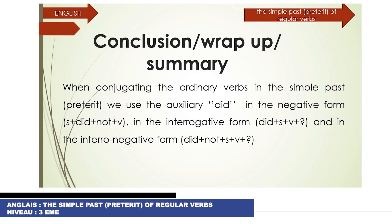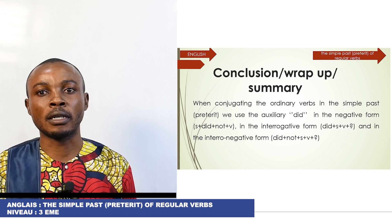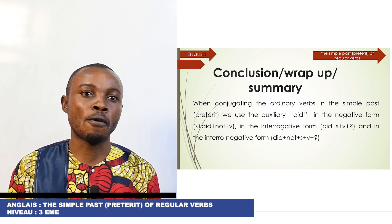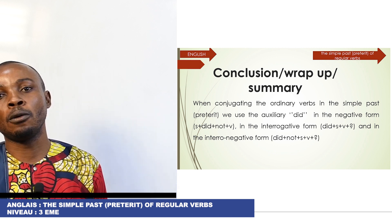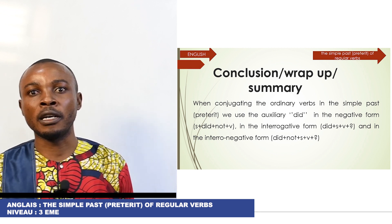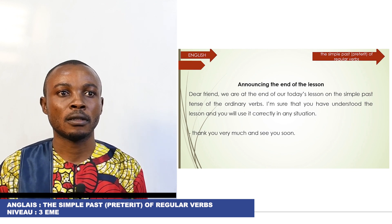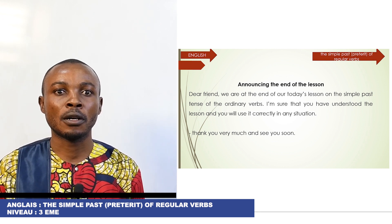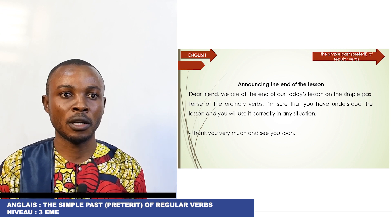Well, now, when conjugating ordinary verbs in the simple past or preterit, we use the auxiliary did: in the negative form as subject plus did plus not plus verb, in the interrogative form did plus subject plus verb plus question mark, and in the inter-negative form did plus not plus verb plus question mark. So, dear friends, we are at the end of our today's lesson on the simple past tense of ordinary verbs. I'm sure that you have understood the lesson and will use it correctly in any situation. Thank you very much and see you soon.